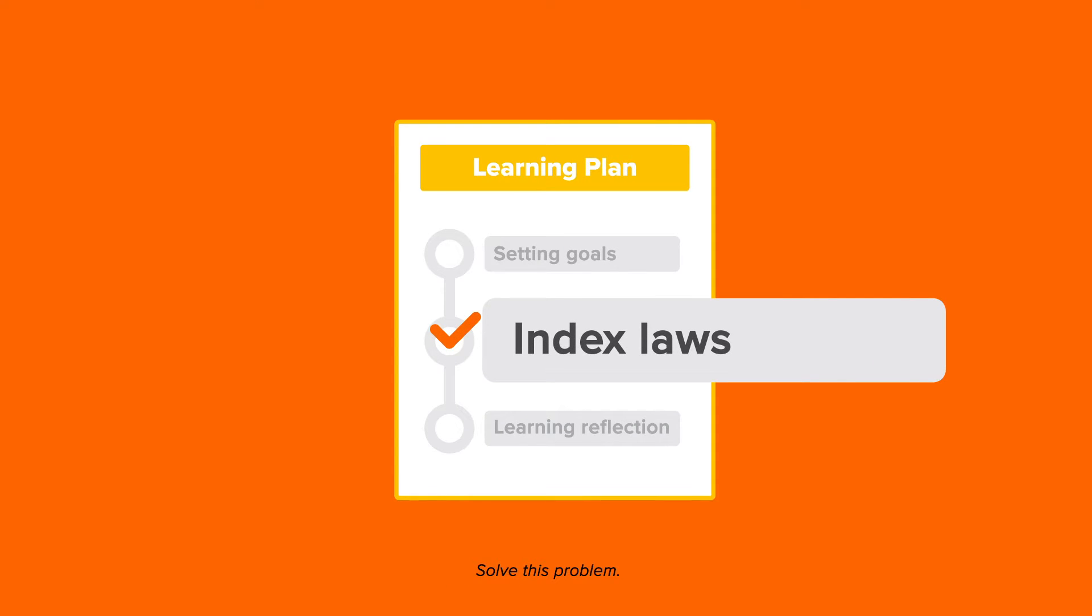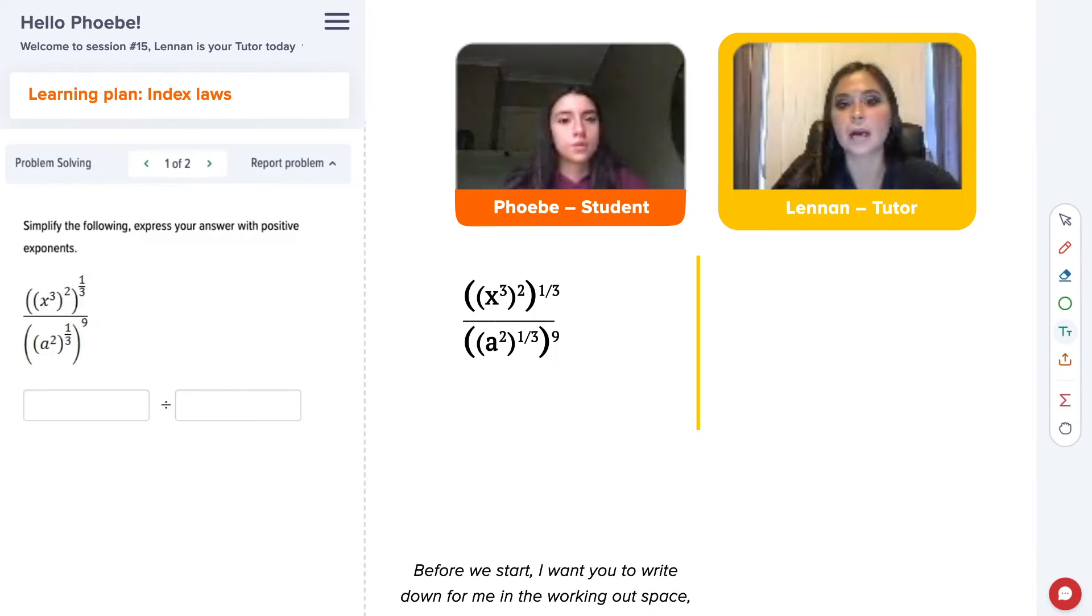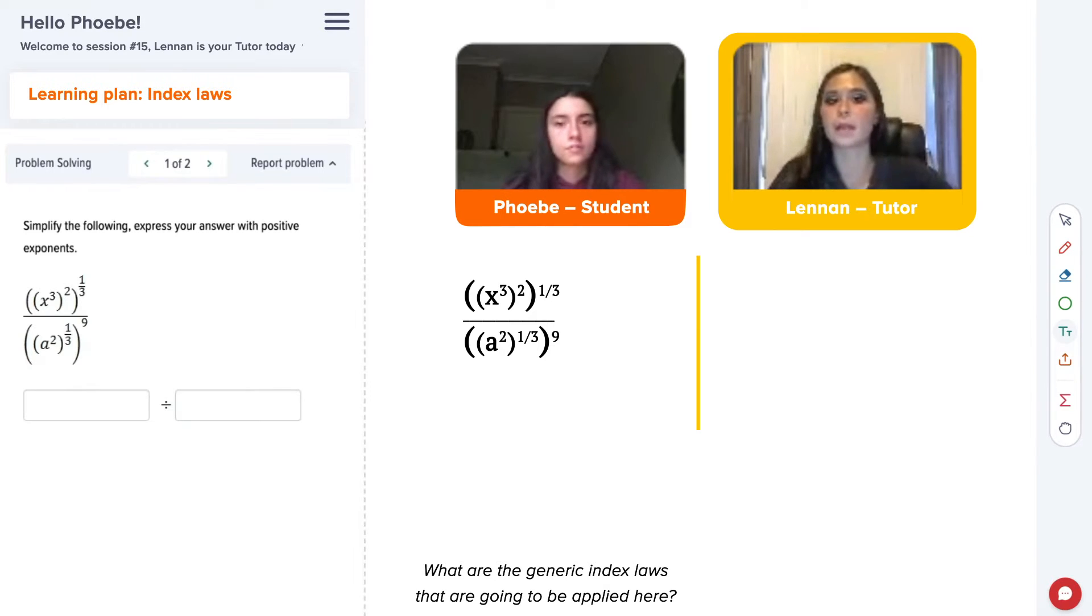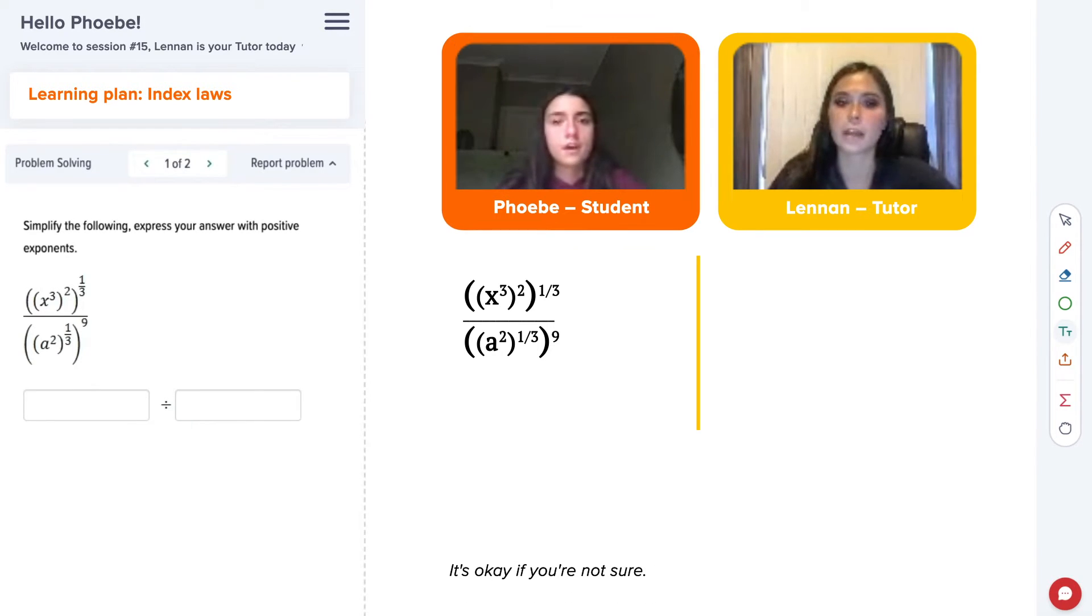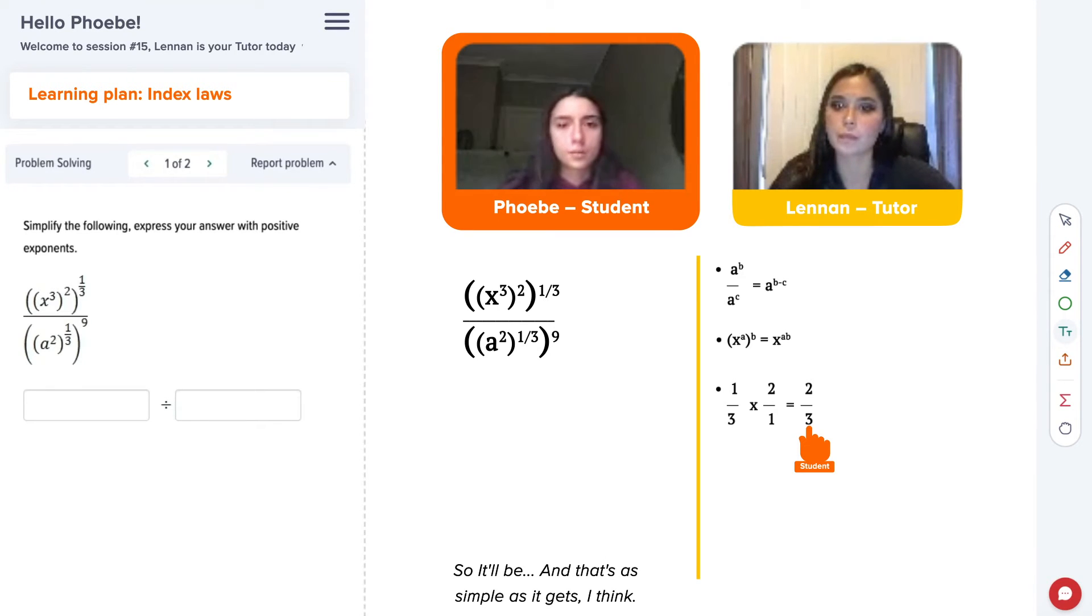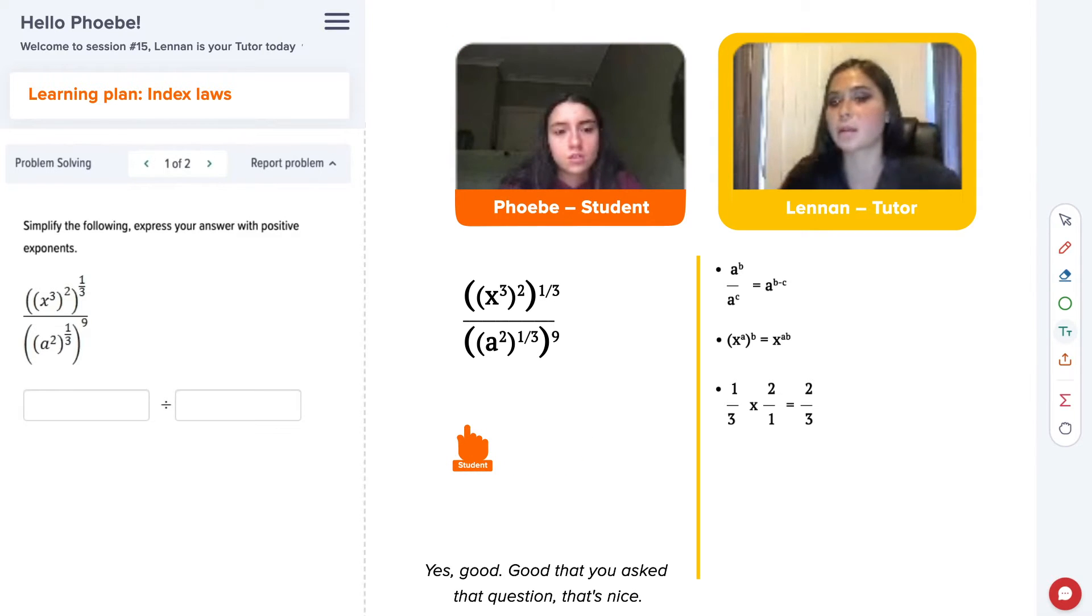To solve this problem before we start I want you to write down for me in the working out space or brainstorm the possible rules in generic form that we're going to use. What are the generic index laws that are going to be applied here? It's okay if you're not sure. So it'll be... and that's as simple as it gets I think. Yes, good, good that you asked that question, that's nice.